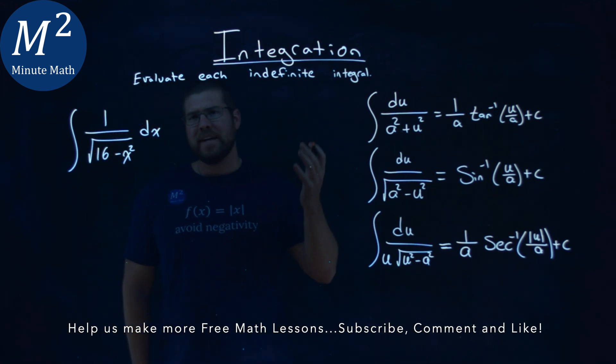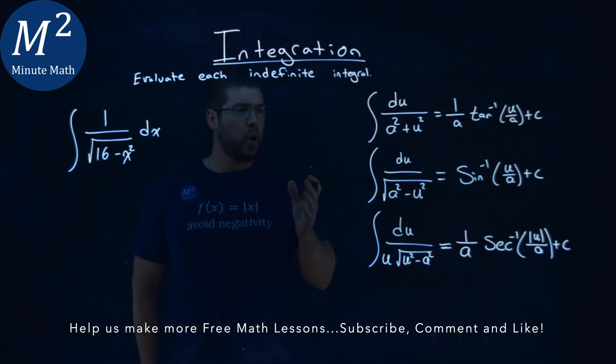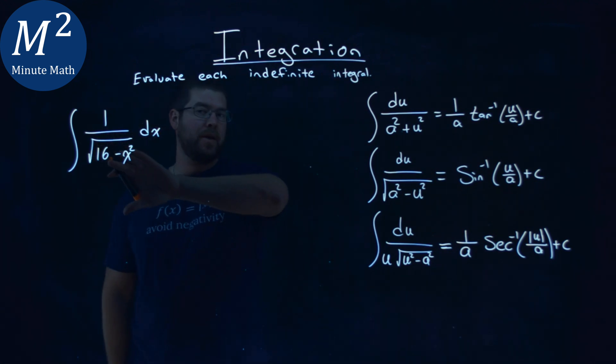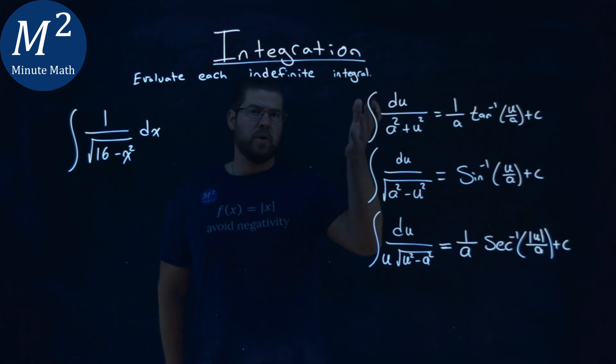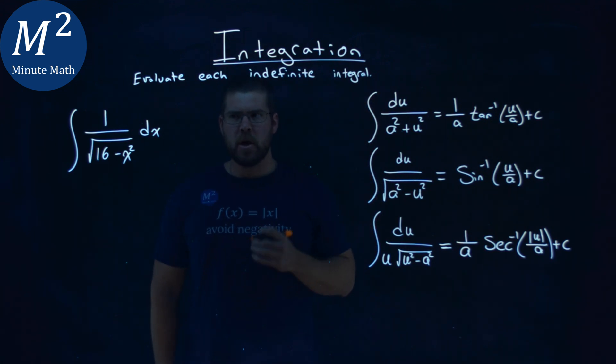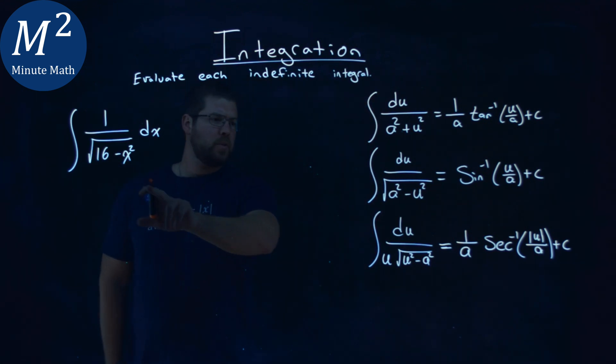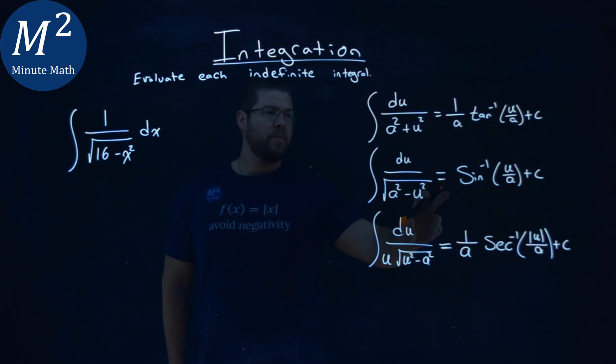Now, we have some identities here to help us, so our goal is to see if we can rewrite this integral to represent it similar to one of our identities. Let's see which one it looks like, and I'm looking at the arc sine one.